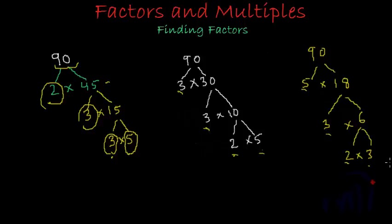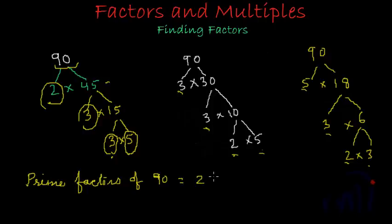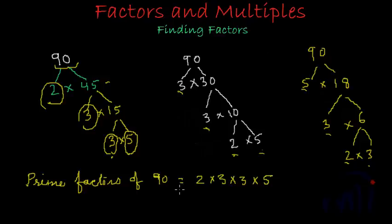So the prime factors of 90 can be written as 2 multiplied by 3 multiplied by 3 multiplied by 5. These are the prime factors. The prime factors of any given number is a set of prime numbers which, when multiplied, result in the number itself. So the prime factors of 90 are 2, 3, 3, and 5.